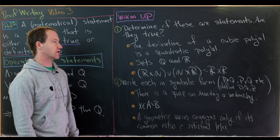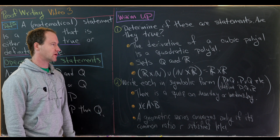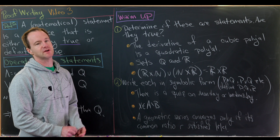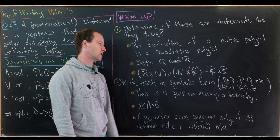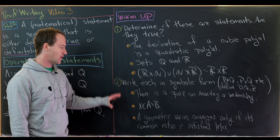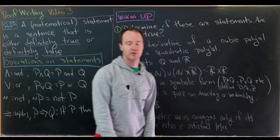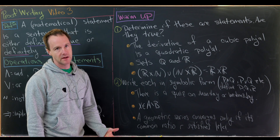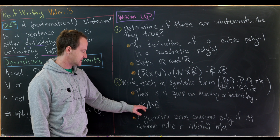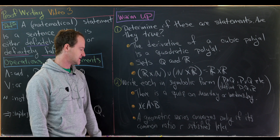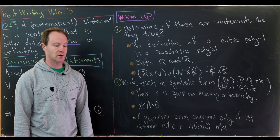Let's end with some warm-up problems. First, determine if the following are mathematical statements and if so whether they are true: (a) 'the derivative of a cubic polynomial is a quadratic polynomial'; (b) 'sets Q and R'; (c) 'the union of ℝ×ℕ with ℕ×ℝ equals ℝ×ℝ.' Then, write the following in symbolic form using component statements p, q, r as needed with operations ∧, ∨, ¬, and →: (a) 'there is a quiz on Monday or Wednesday'; (b) 'x ∈ A \ B'; (c) 'a geometric series converges only if its common ratio r satisfies |r| < 1.'